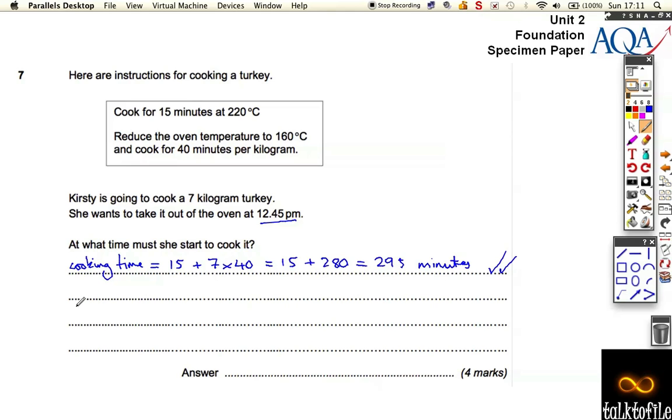We need to convert 295 minutes into hours. We've got 60, 120, 180, then 240 - that's 1, 2, 3, 4 hours, 60 minutes each hour. So it's 4 hours and 55 minutes, and that's worth another mark. It's not 5 hours because that would be 300 minutes and we've got 295.